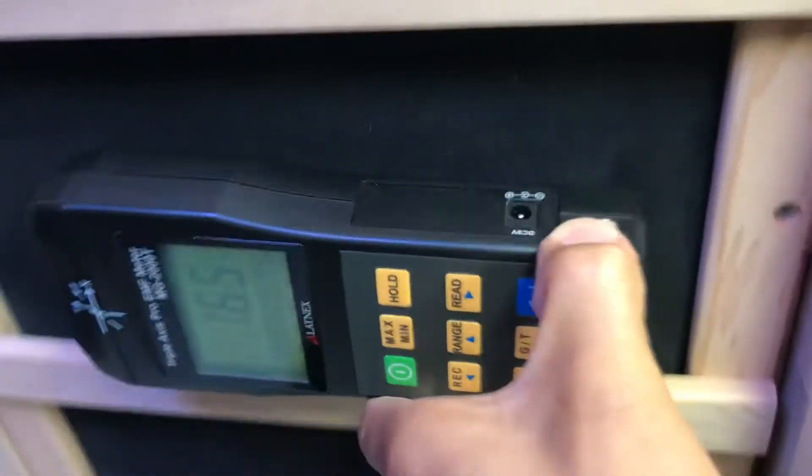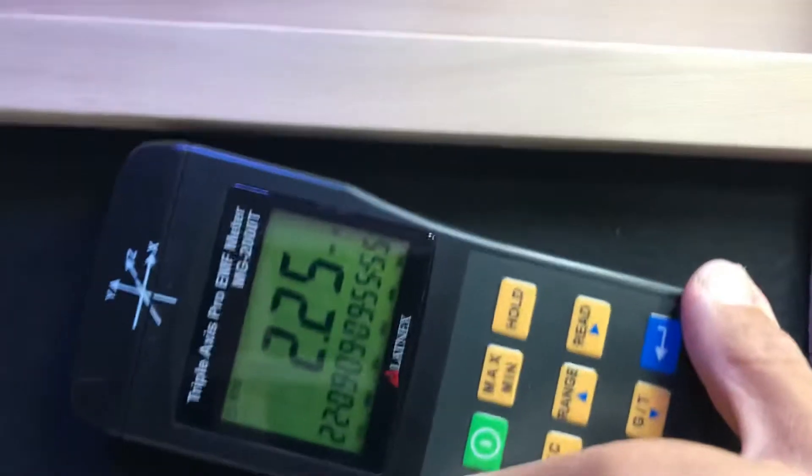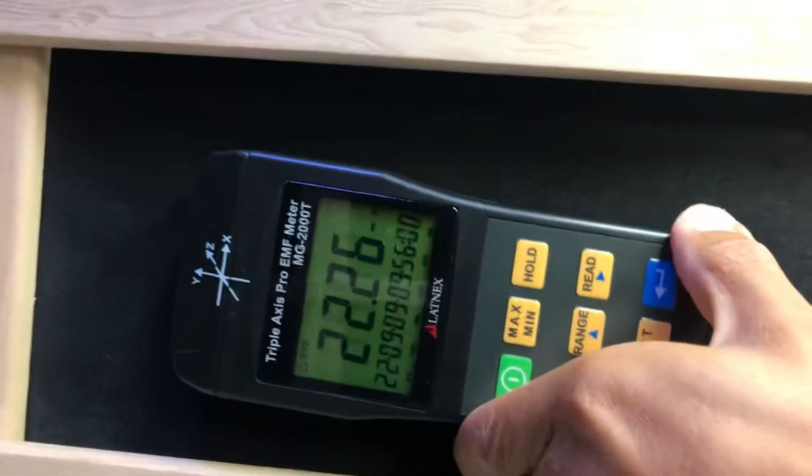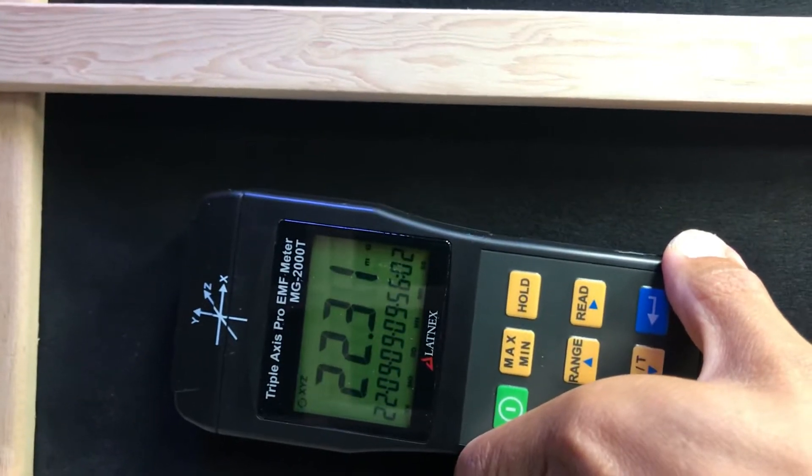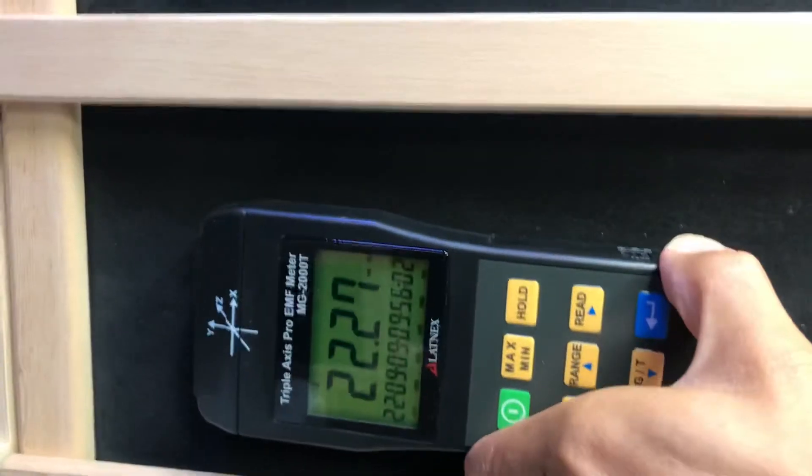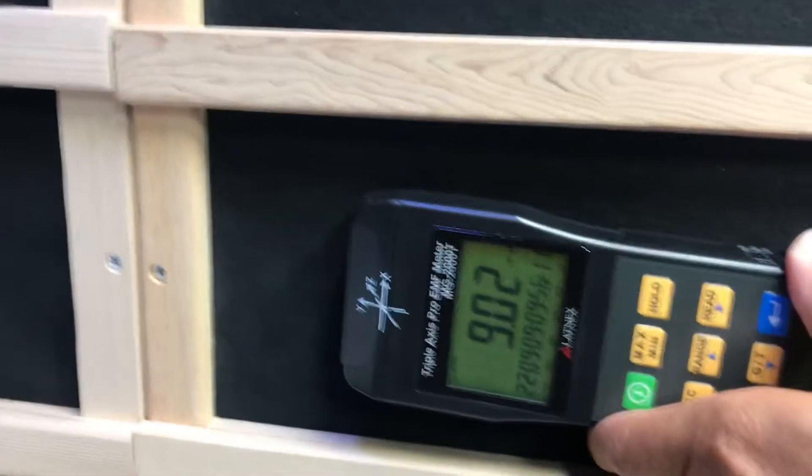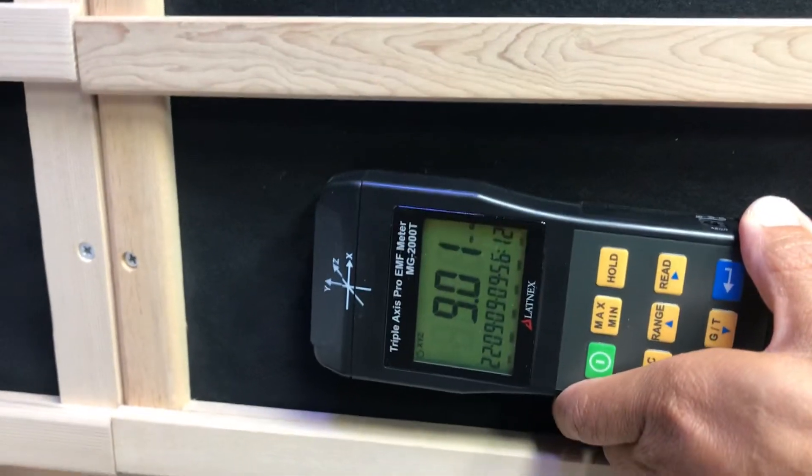Now we are going to look at the heater. So we put it at zero distance right on it. This EMF is 2.27. This is 22-something. This is 148-something. This is 89-something.